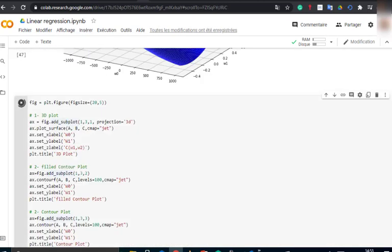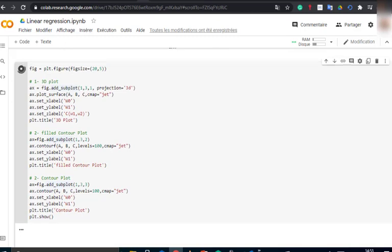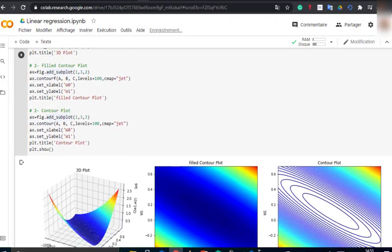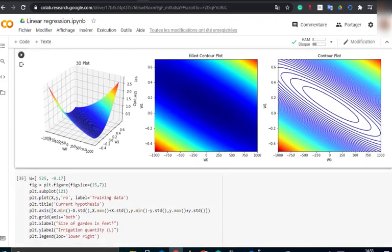To check that the cost function is convex, I have plotted this cost function in three versions: 3D, filled contour plot, and contour plot. With the code in the last cell, you can visualize at the same time,